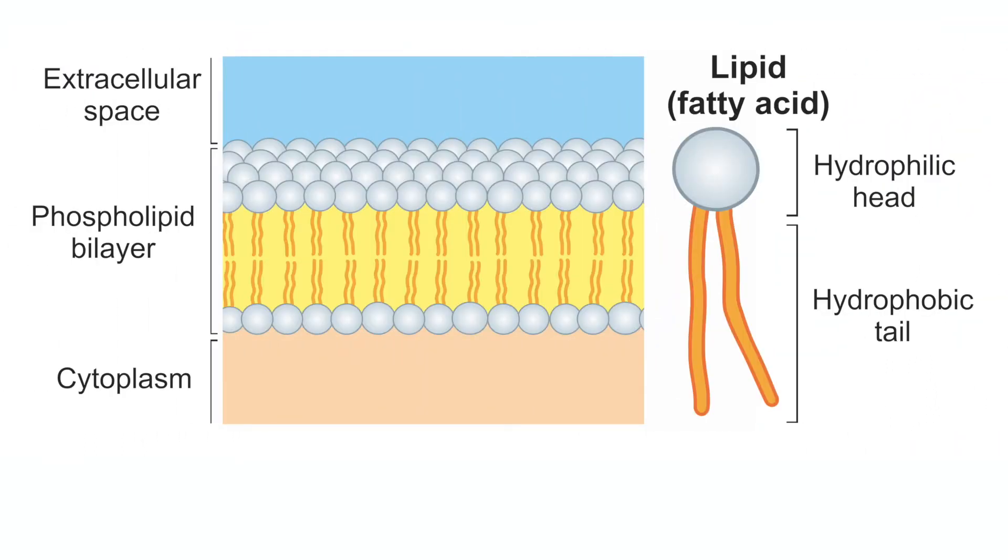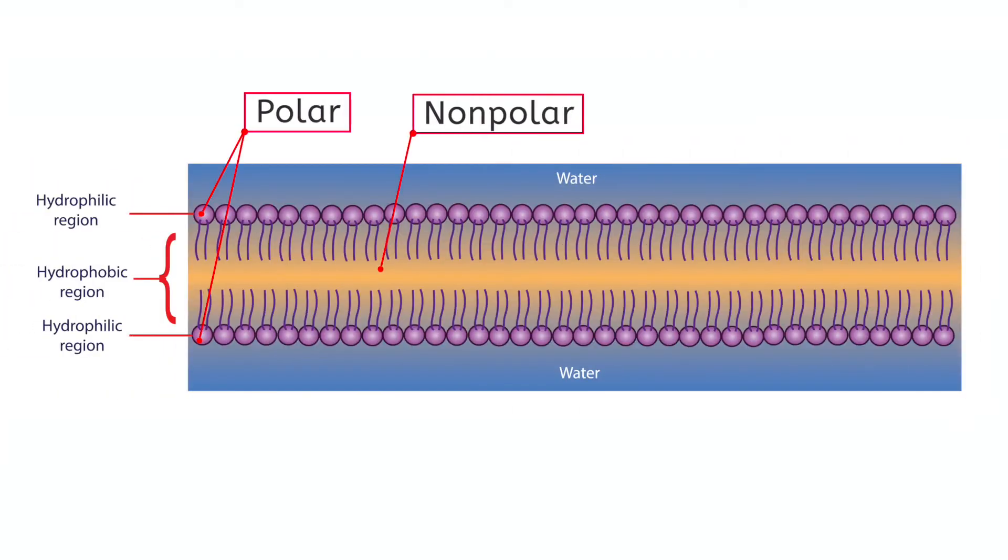In a phospholipid bilayer or cell membrane, the phospholipids always line up tail to tail, with the hydrophilic heads facing the outside and the hydrophobic tails on the inside. This is because the outside faces of the membrane will come in contact with water molecules and often form hydrogen bonds with them, so the outside of the membrane needs to be polar.